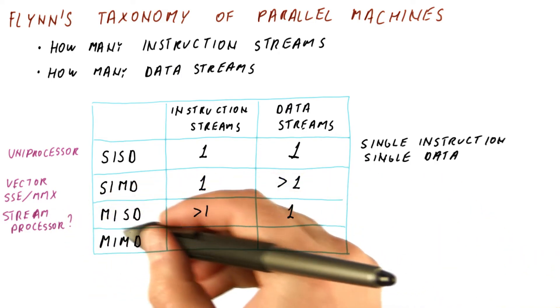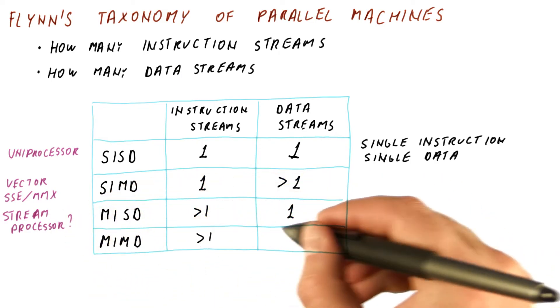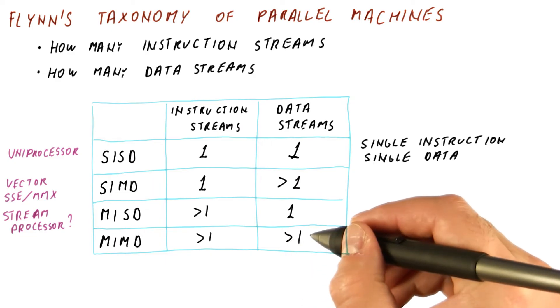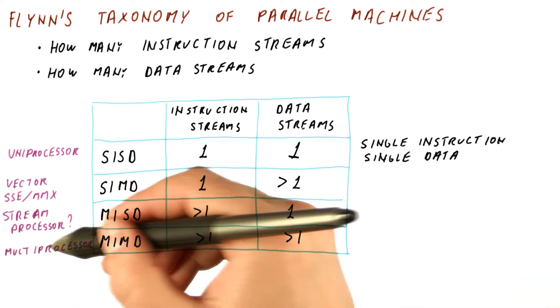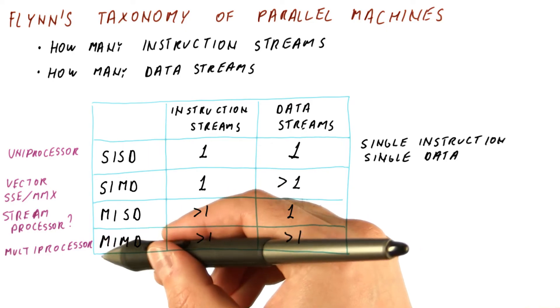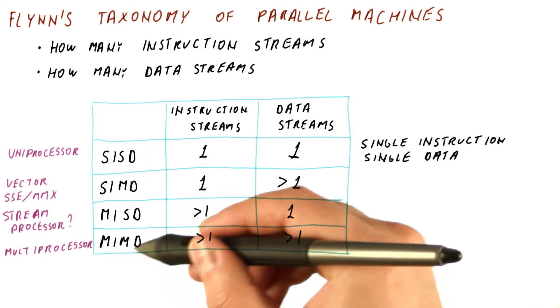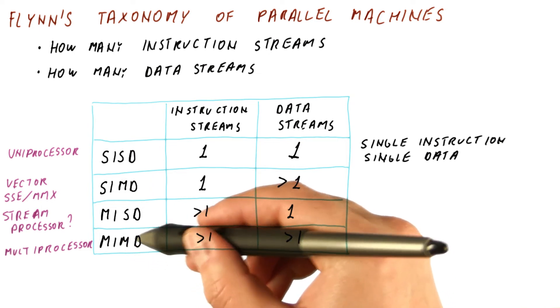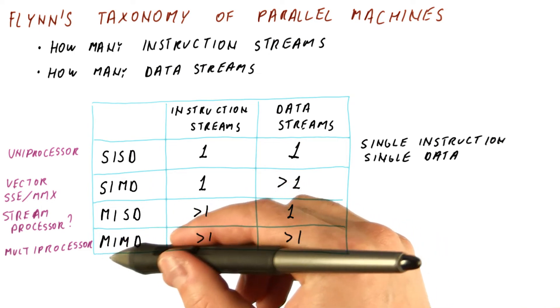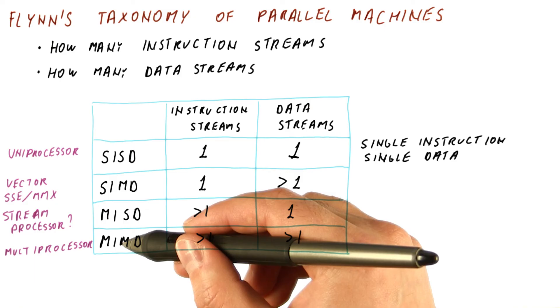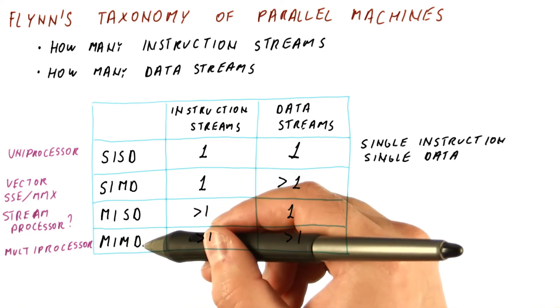And then we have MIMD, where there is more than one instruction stream and more than one data stream. This would be your normal multiprocessor, where each processor has its own program with its own program counter, and each operates on its own data. They don't have to do things in lockstep and they don't do something like stream processing.